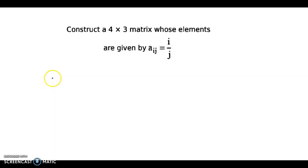Hello and welcome back. I am discussing an example from matrices. The question is, construct a 4 by 3 matrix whose elements are given by aᵢⱼ equals i upon j.